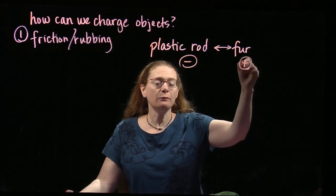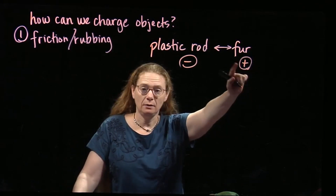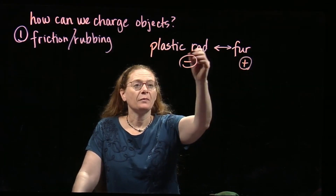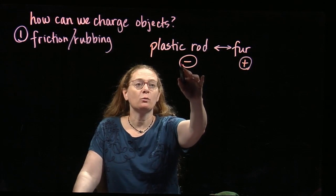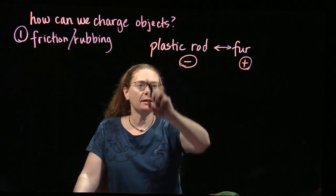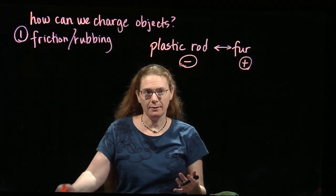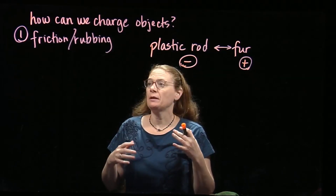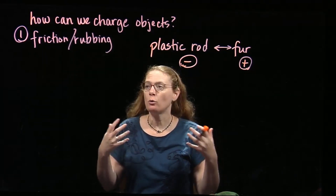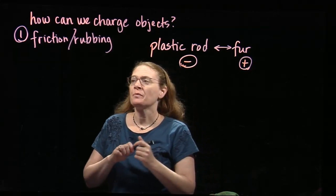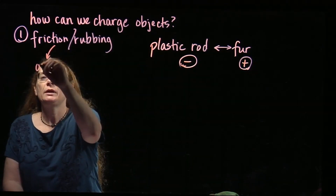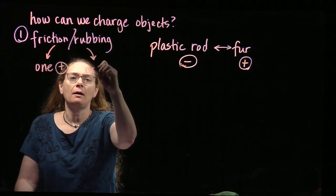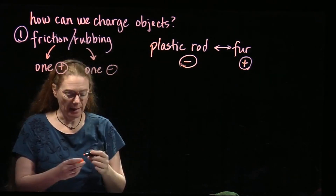The fur gives up some of its negative charges, which means it's left positive. The plastic rod grabs those electrons from the fur and ends up negative. So when we charge something by friction or rubbing, one object ends up positive and the other ends up negative.